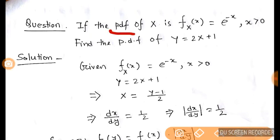This is called PDF and we take a PDF of X, f(x) = e^(-x), and the range is x greater than 0. Now we find the PDF of Y = 2X + 1.